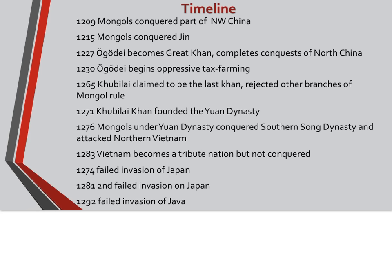In 1276, he conquers the southern Song dynasty and begins to attack northern Vietnam. Vietnam put up a great fight, and in 1283 it did become a tribute nation, though the Mongols did not conquer Vietnam. In 1274 and 1281, there were two failed invasions of Japan, both stopped by intense weather. The Japanese called it kamikaze, known as divine wind, and saw it as divine intervention.